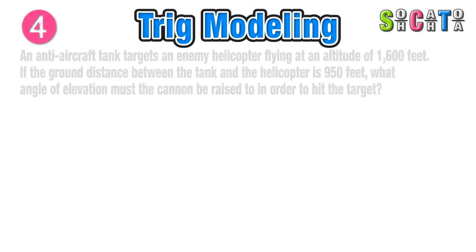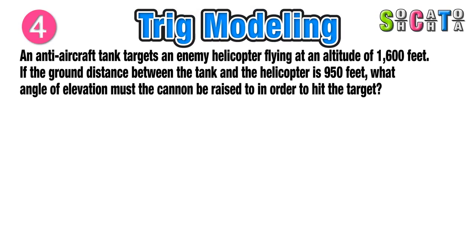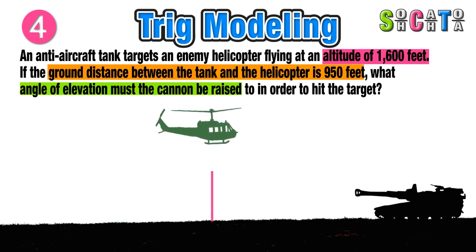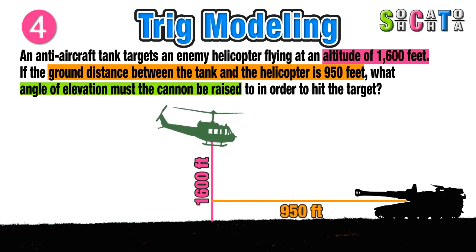Our next scenario: we have an anti-aircraft tank targeting an enemy helicopter flying at an altitude of 1600 feet. The ground distance between the tank and the helicopter is 950 feet, and we need to find the angle of elevation the tank has to raise its cannon to in order to hit the target. The cannon is not currently directed at the helicopter — it needs to elevate a certain number of degrees, and that angle is what we are going to find.